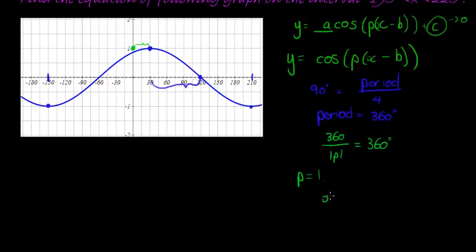So if I make x minus b equal to 0, then my answer for x was equal to 30 degrees. Because my starting position is where I take what's inside here and make it equal to 0.